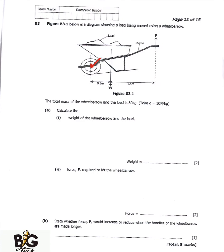From W to where Force F is acting is 1.5 meters. When taking the distance for Force F, you take the distance from the pivot to where Force F is acting. When you add 0.5 meters plus 1.5 meters, you get 2 meters total.